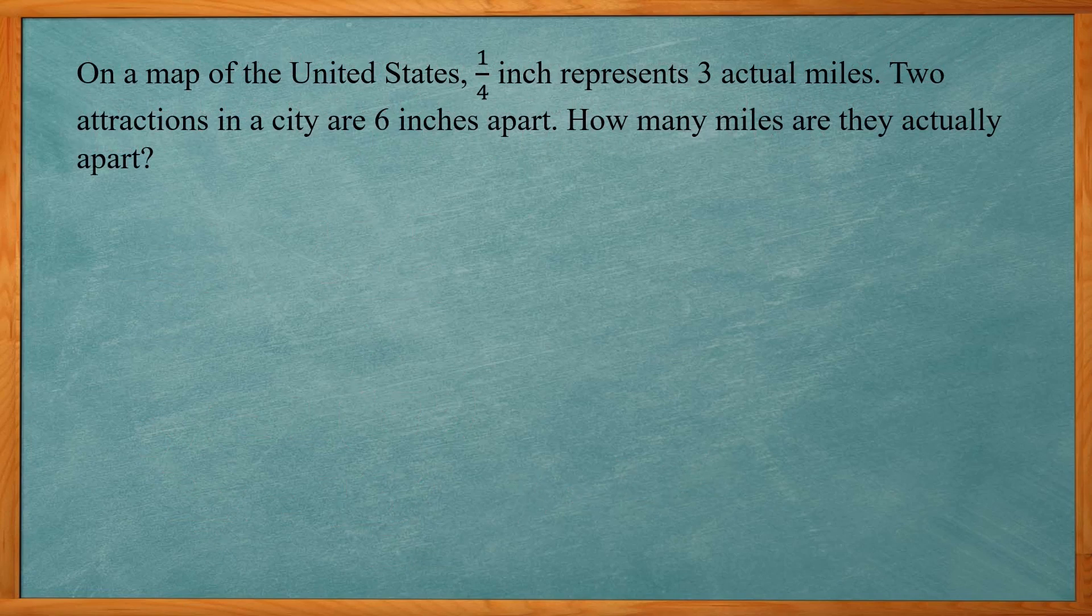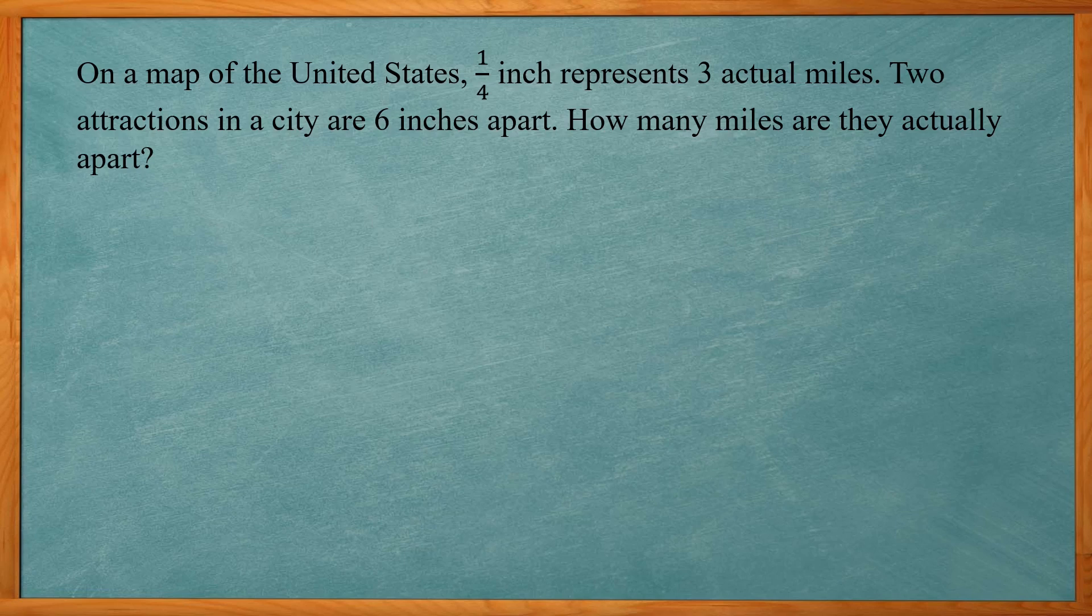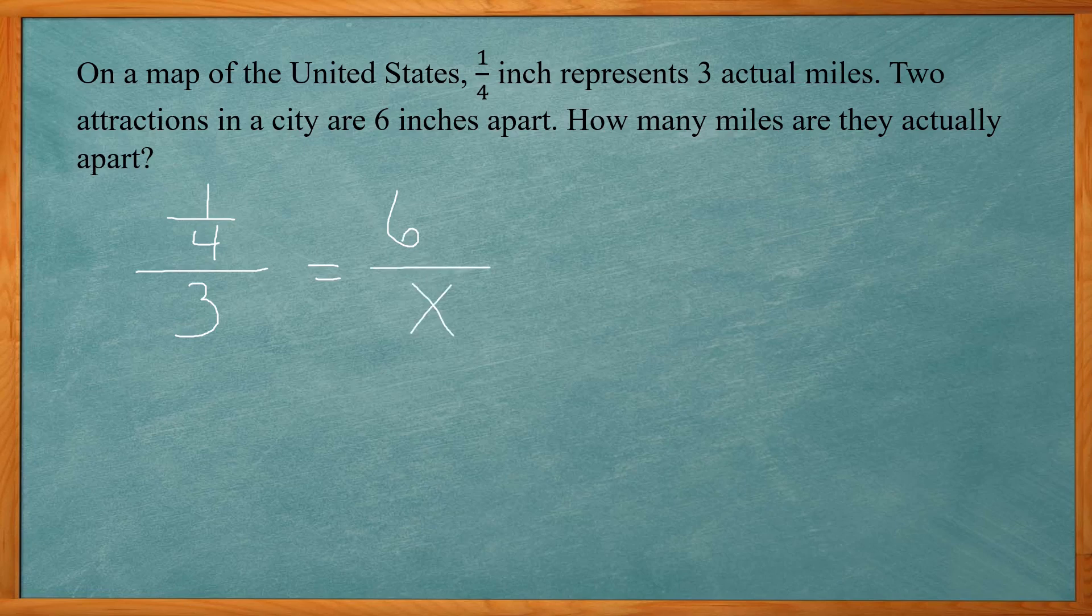This problem says on a map of the United States, 1/4 of an inch represents 3 actual miles. Two attractions in a city are 6 inches apart. How many miles are they actually apart? Okay again we set up our proportion. 1/4 of an inch is to 3 miles and 6 inches is to how many actual miles. Again we cross multiply.